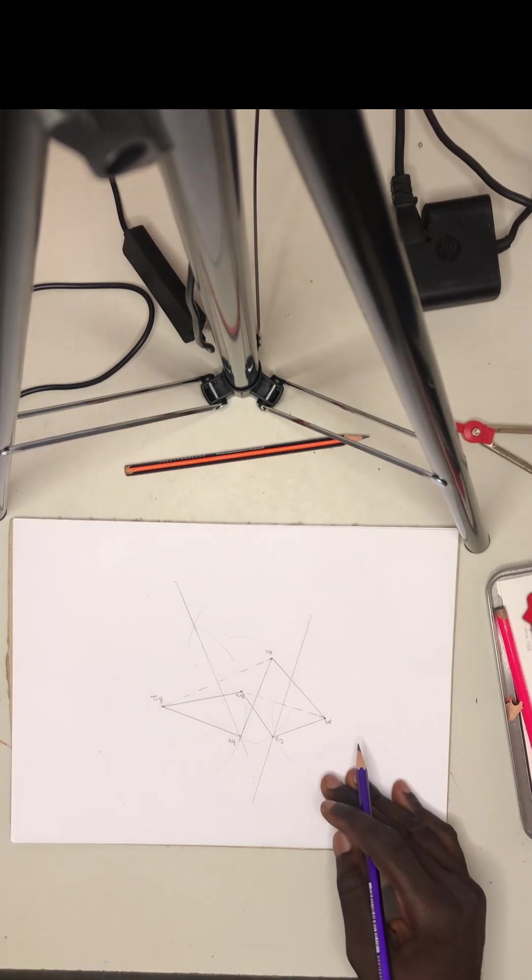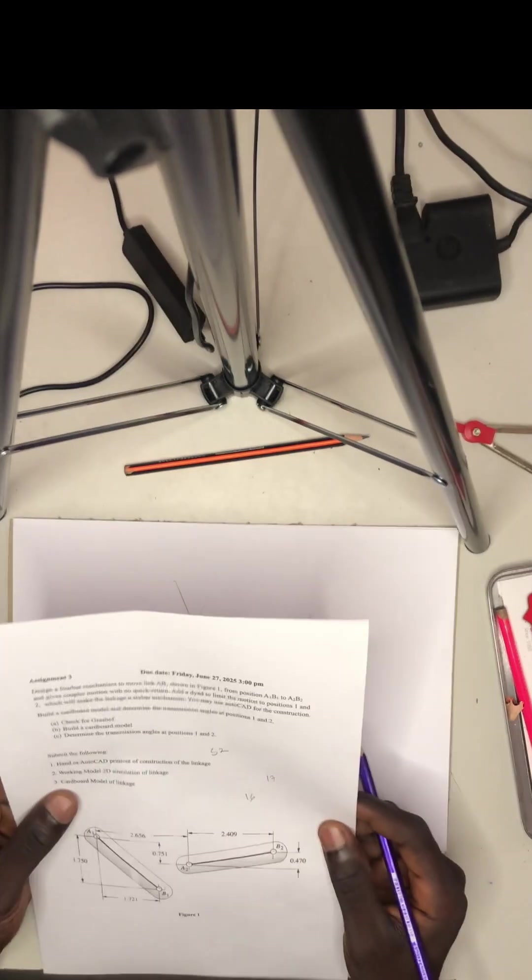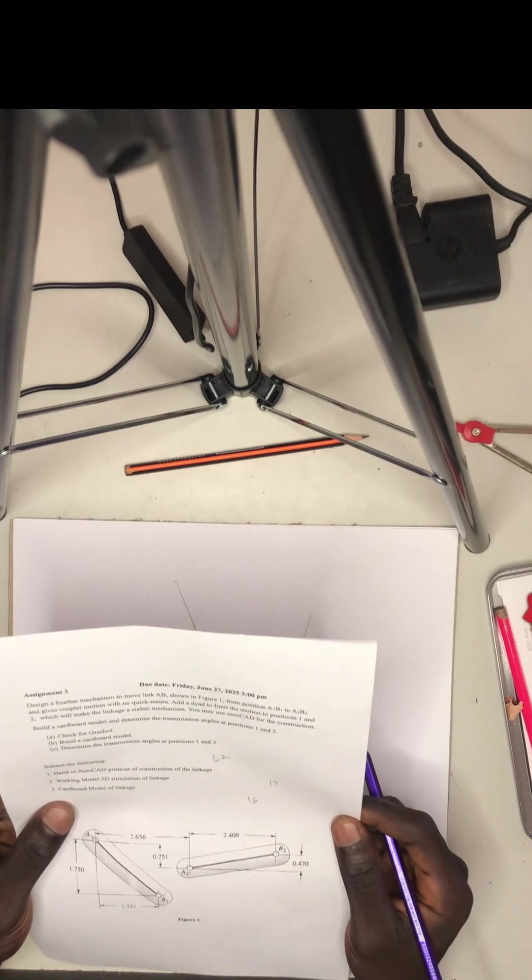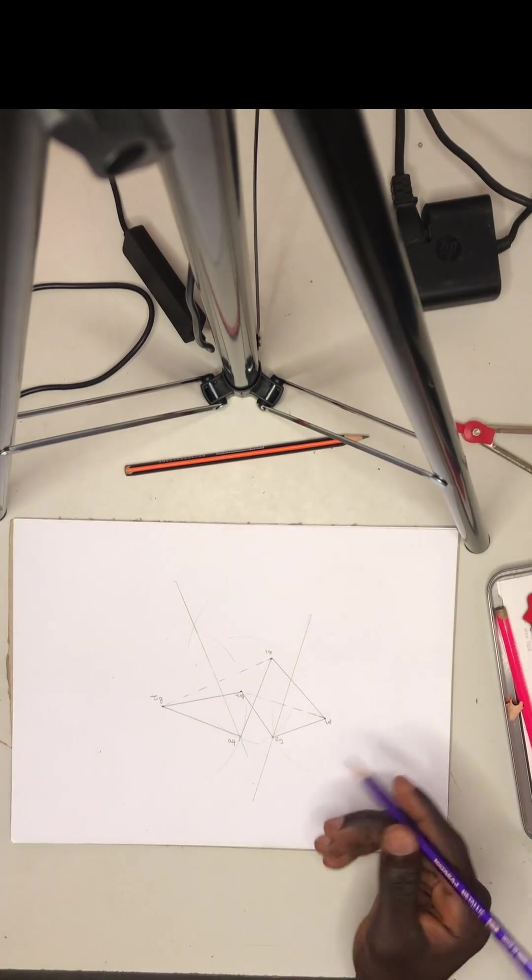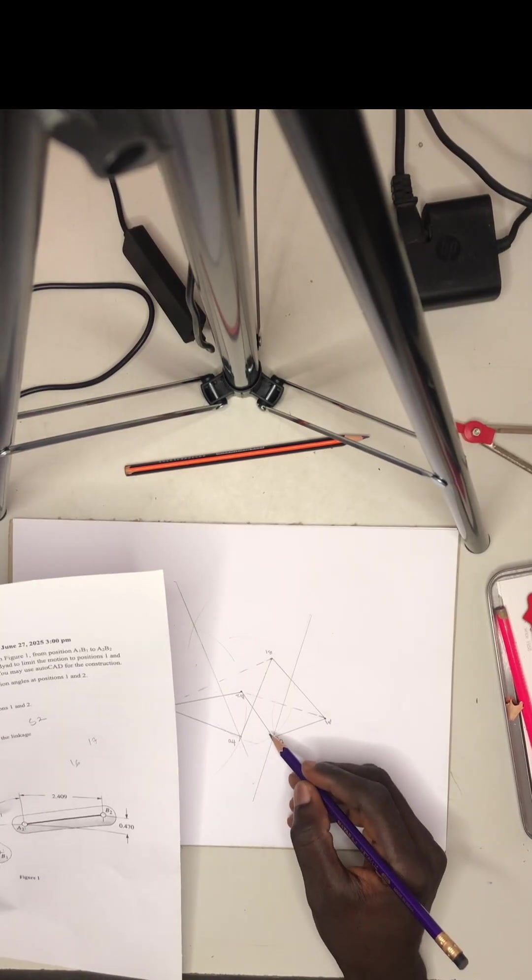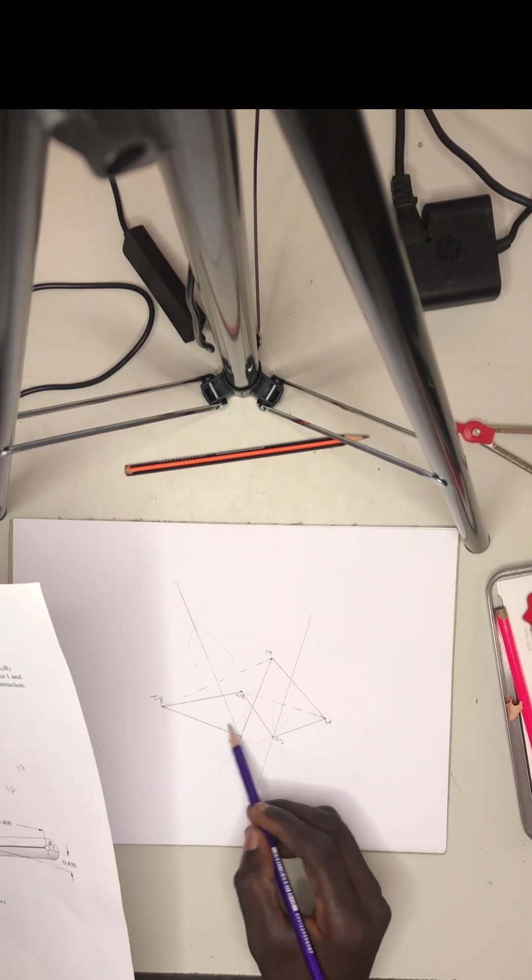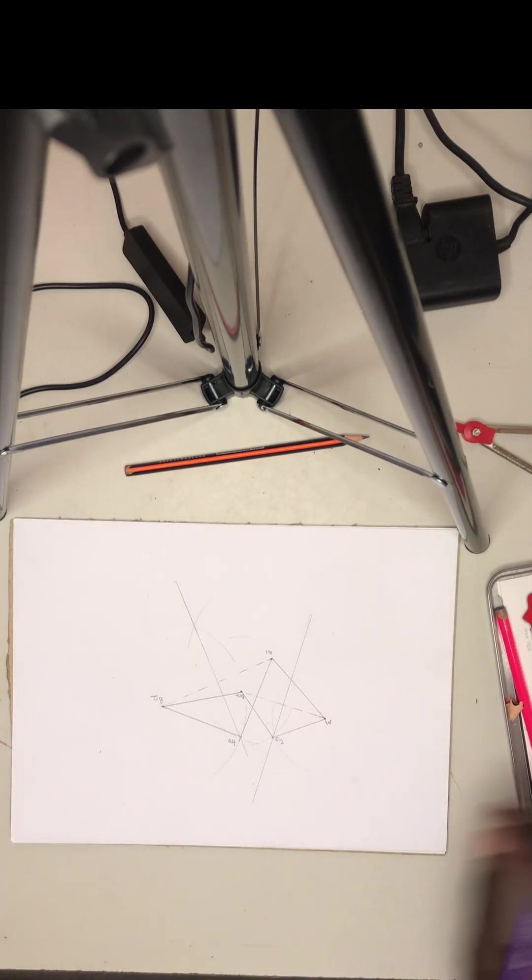We have it here. As we are done, this is a coupler output 4-bar mechanism. We have to attach a dyad to limit the positions. Before we attach the dyad, we need to know the angles. We need to measure this angle and this angle and then attach the dyad to the next one.